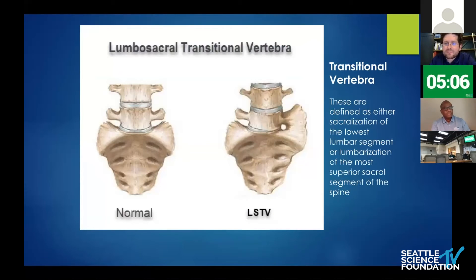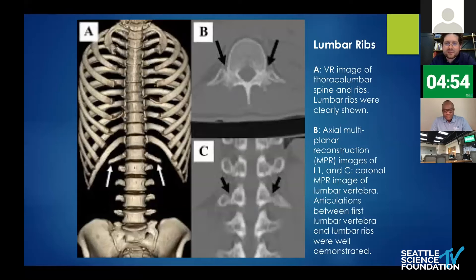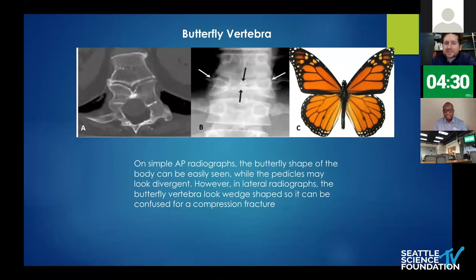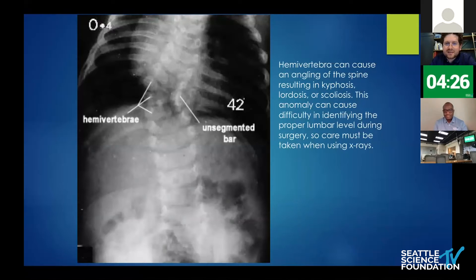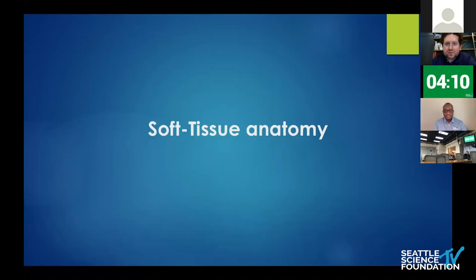Going through some bony variants: you've got your transitional vertebra — either sacralization of your lowest lumbar segment or lumbarization of your most superior sacral segment. You can also have lumbar ribs, which is important because if you don't recognize them, you could operate on the wrong level — particularly if you're trying to access the lower thoracic spine. Additionally, butterfly vertebrae are variants you must recognize as a deformity surgeon, as some of these cause deformity or create surgical challenges. A hemivertebra is another important variant.